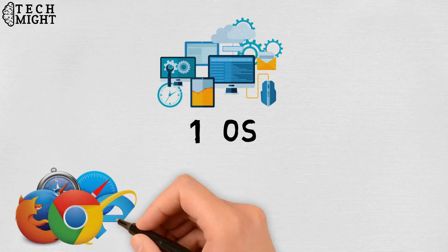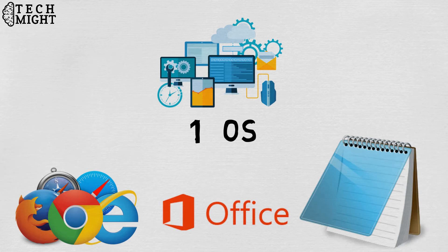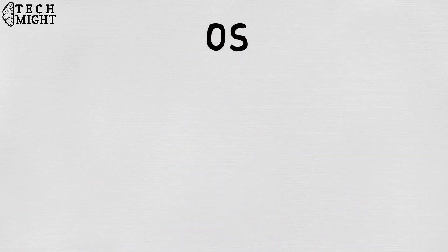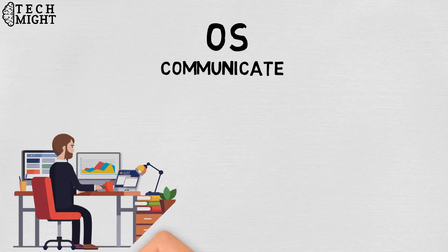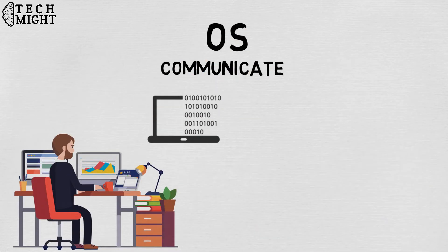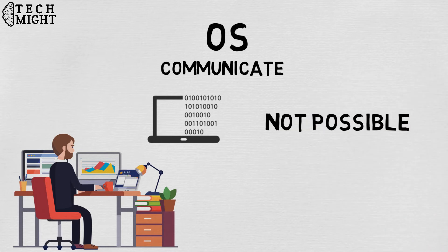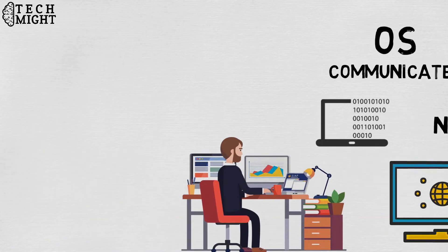Applications like browsers, MS Office, Notepad, etc. need some environment to run and perform their tasks. The operating system helps you to communicate with the computer without knowing how to speak the computer's language. It is not possible for the user to use any computer or mobile device without having an operating system.